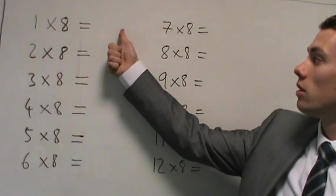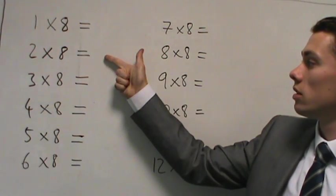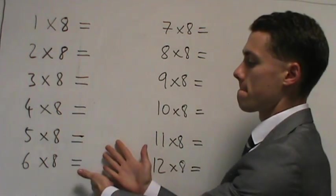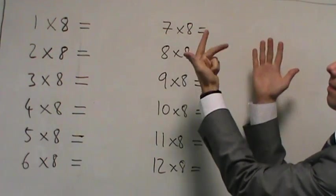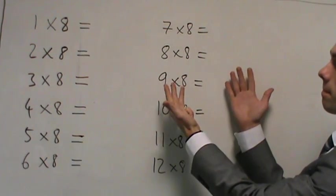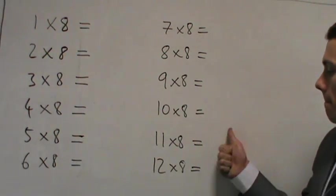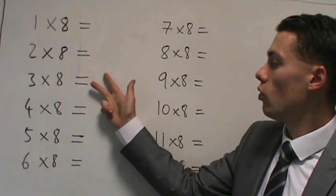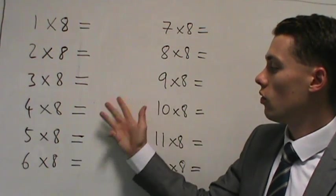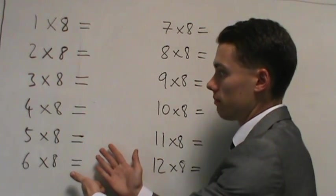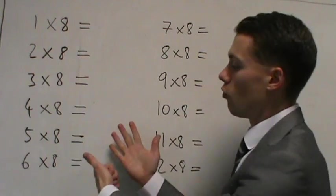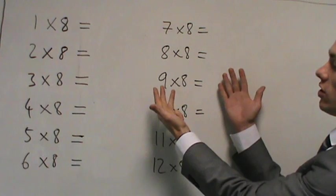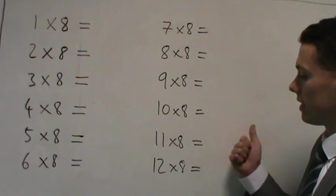Let's go through one more time. So hopefully you've got that it was 8, 16, 24, 32, 40 — sorry — 48, 56, 64, 72, 80, 88 and 96.